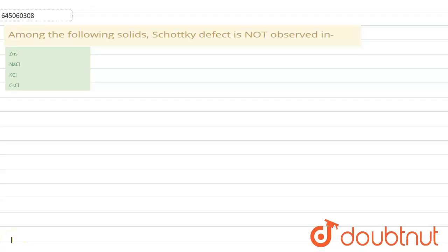have to find out from the following which compound does not show Schottky defect. Now first of all we have to see what